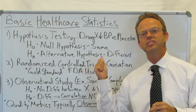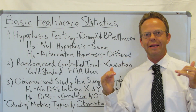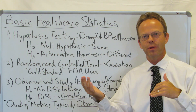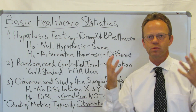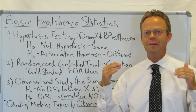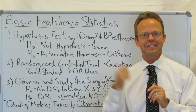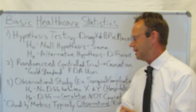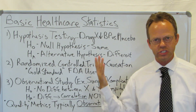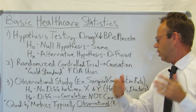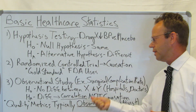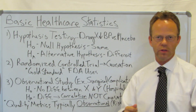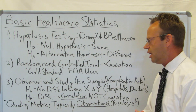It also has to be blinded to the researchers themselves. When they're analyzing the data, they can't know which group had the placebo versus the blood pressure pill, because the researchers themselves will subconsciously or consciously bias their analysis to give them the results they want. Another way to generate data is referred to as an observational study, where we might observe a surgical complication rate at one hospital versus another, or for one surgeon versus another.